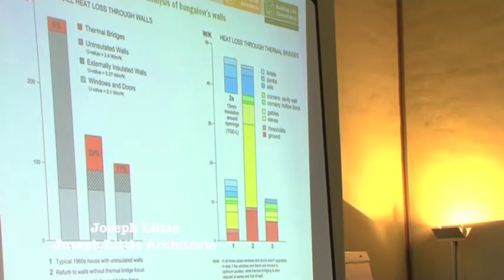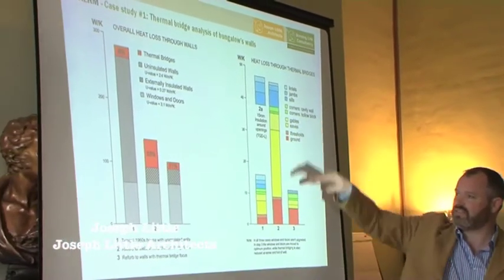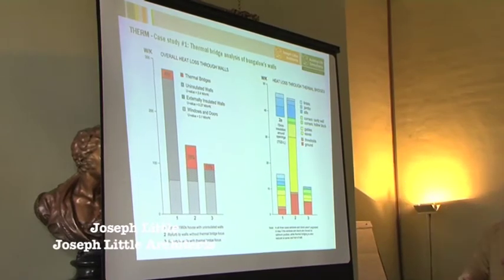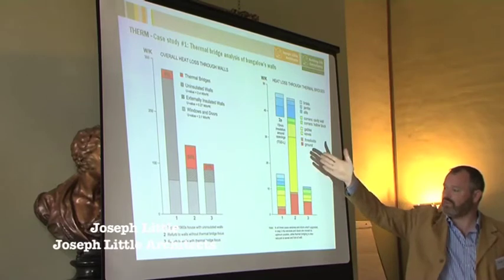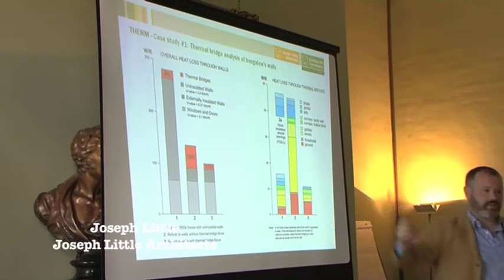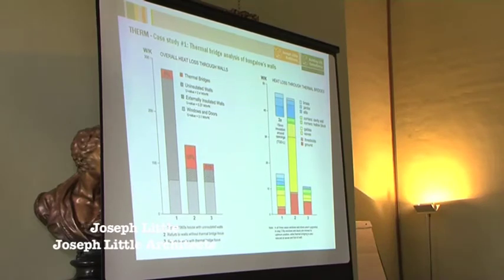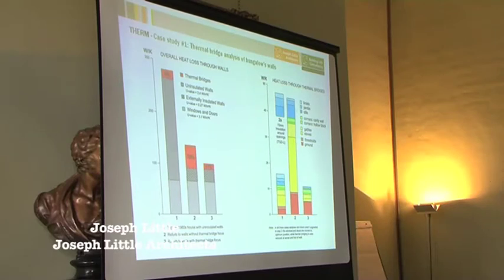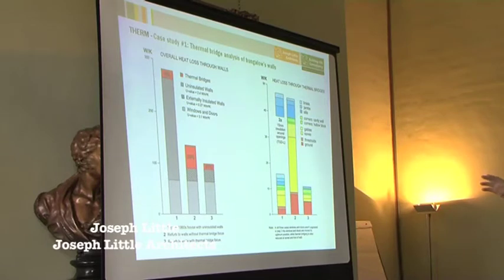Breaking down the thermal bridging areas: what jumps out is that in the Agrimol version and version 2, the poor quality retrofit, the gables and eaves have a huge amount of extra heat loss. So even if your budget didn't stretch to dealing with low thermal bridging approaches throughout all those junctions, if you don't do something at the gables and eaves — once you know that's the level of heat loss occurring there — you would be very, very foolish. If you had a tight budget and had to make compromises, you should not compromise your thermal bridging junctions at those particular gables and eaves.